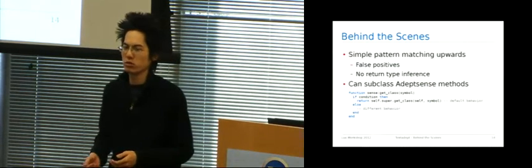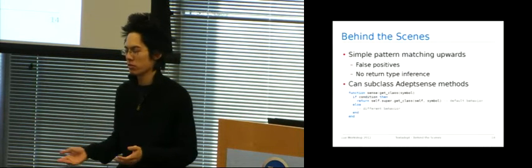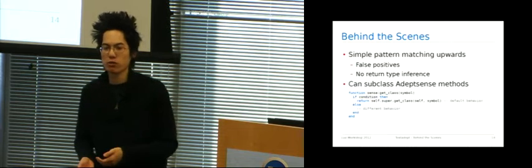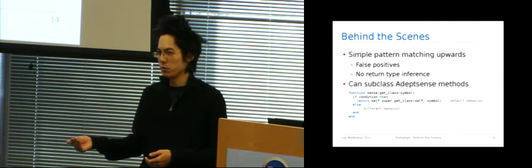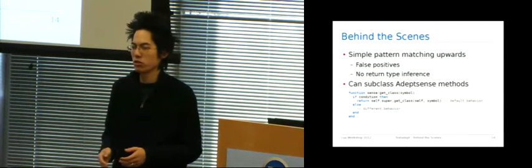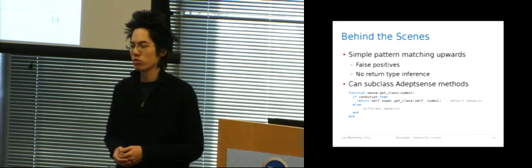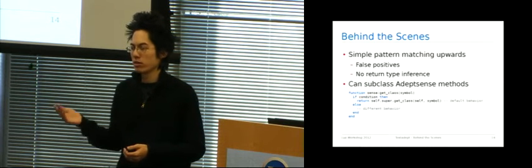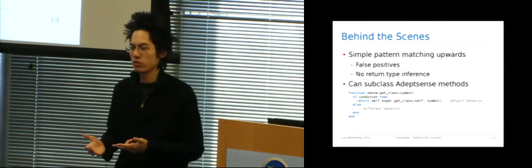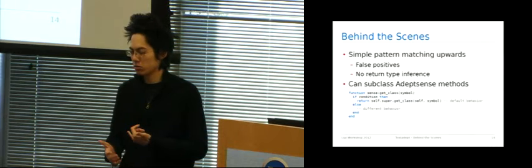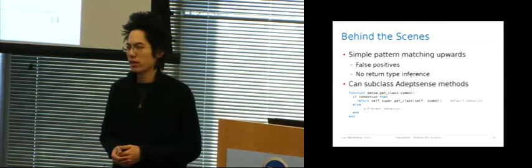So behind the scenes, all AdeptSense is really doing for this type inference is it's searching backwards, trying to match patterns. Now this obviously has some false positives. For example, it could incorrectly infer the type of a global variable as the type of a local variable of the same name in a previously defined function. Also, it has no way of inferring the type from the return value of a function. However, despite these shortcomings, for myself at least, this method works quite well. I haven't had any real major problems with it. I've written AdeptSenses for C, for Lua, CSS, HTML, Java, PHP, Python, Ruby. For all these languages, I haven't had any major issues.